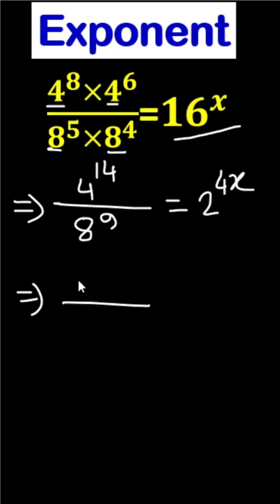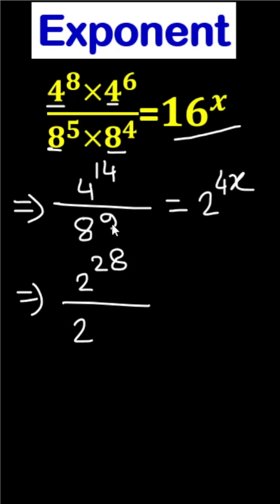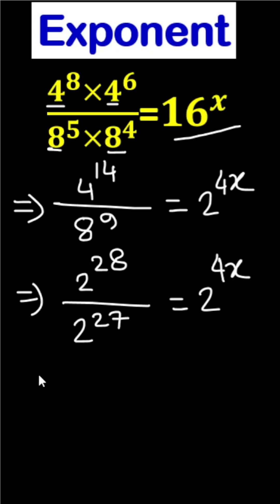4 we can write as 2 squared, times 14, it will be 28. 2 cubed means 8, that is 2 to the power 3, and here is 9, so 3 times 9 is 27. Equal to 2 to the power 4x.